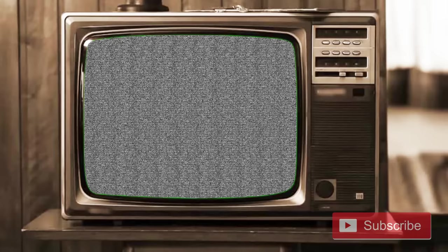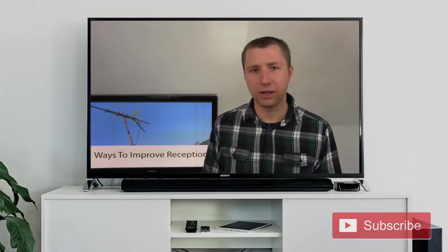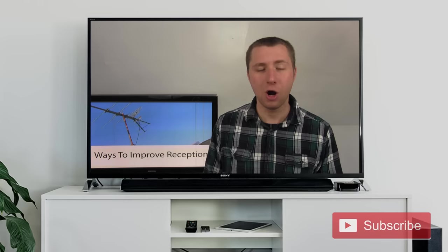So back in the analog days if reception wasn't optimal you'd probably have a little bit of static both in the picture and in the sound and you might also have some ghosting due to multipath interference. In the digital era you either have the signal or you don't so you have to do everything you can to get the best reception possible or else you'll see something like this.